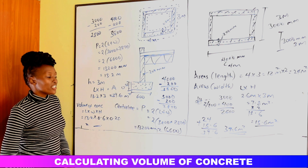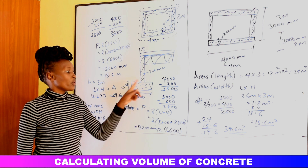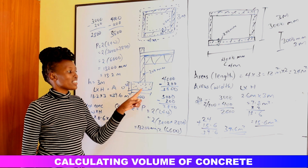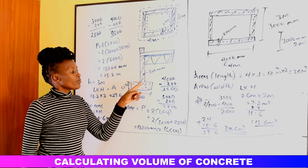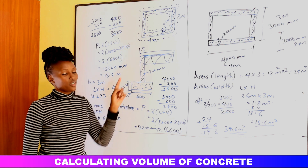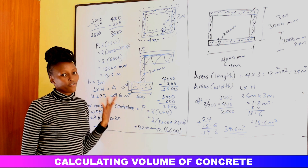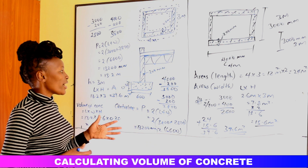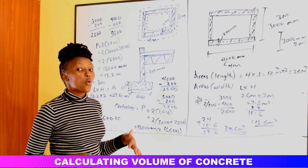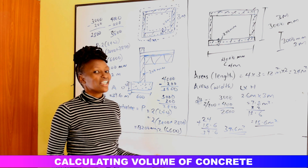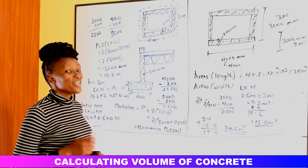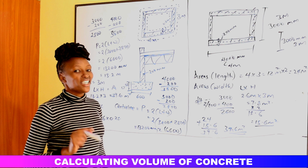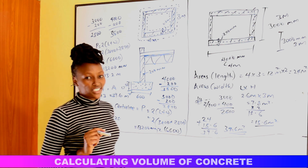If we wanted the area of the wall, we would take the center line of 13.2 meters and multiply by the wall height. Center line helps us a great deal. That is the foundation for understanding why and how we calculate center lines. There is also a very simple method to calculate center lines — check out our next video for that.